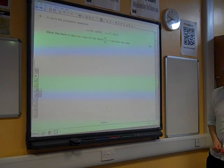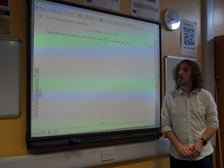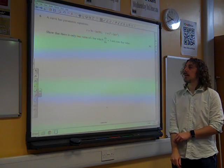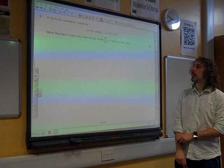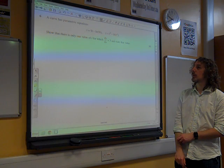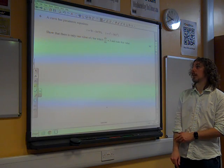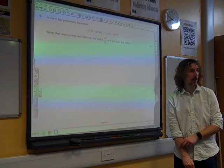Great, so question 6 is the parametric equations question. x equals 9t minus ln(9t), y equals t cubed minus ln(t cubed). Show that there is only one value of t for which dy/dx equals 3, and state that value.